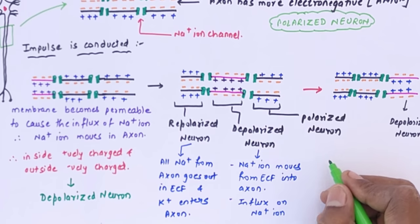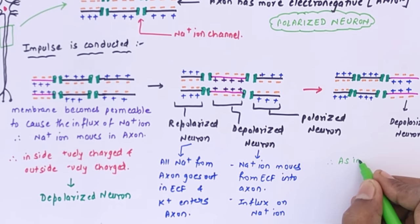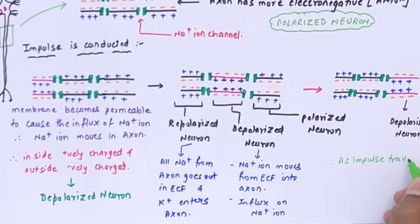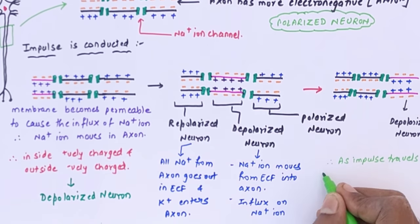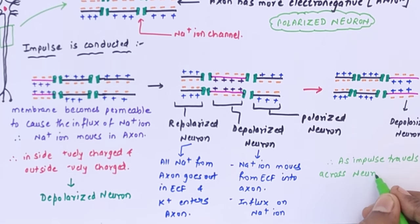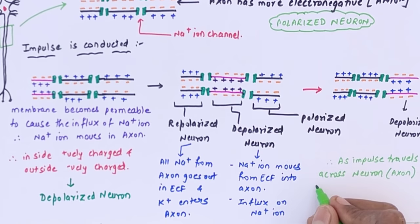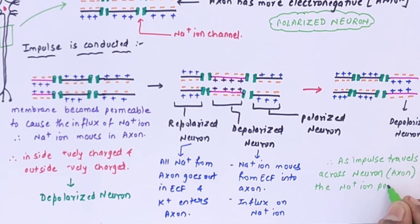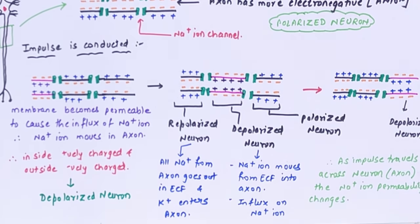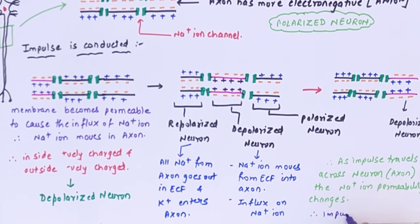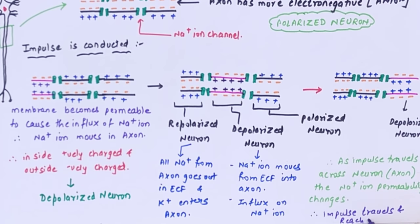As the impulse travels across the axon, the Na+ ions move in and out — the membrane becomes permeable, allowing exchange of ions. Due to the polarized, depolarized, and repolarized conditions, the impulse travels through the axon. This is how conduction of impulse occurs in the neuron.